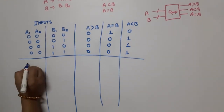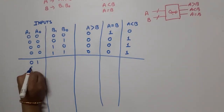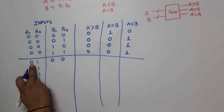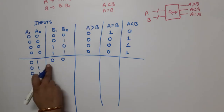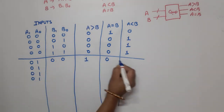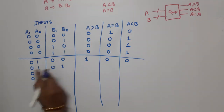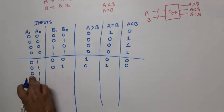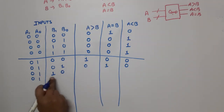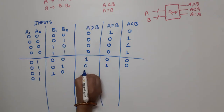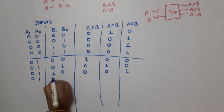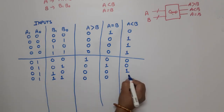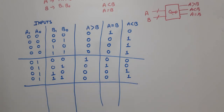Second case: A is 0,1. Compared with all B combinations. When B=00, A=1 and B=0, so A is greater than B: output 1,0,0. When B=01, both are equal: output 0,1,0. When B=10, A=01 and B=10, so A is less than B: output 0,0,1. When B=11, again A is less than B: output 0,0,1.